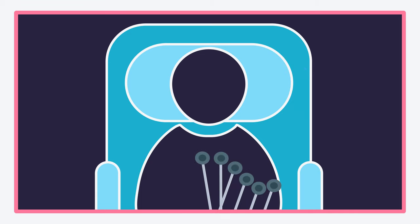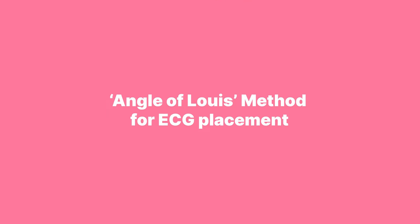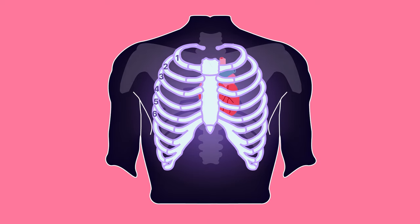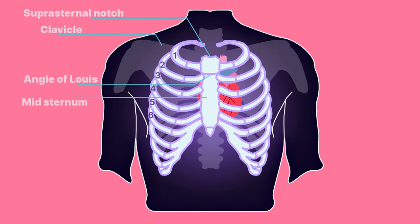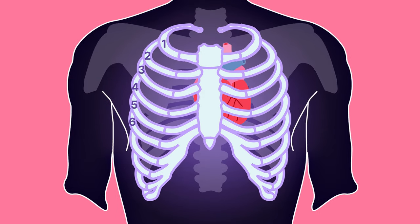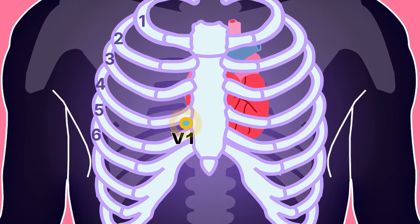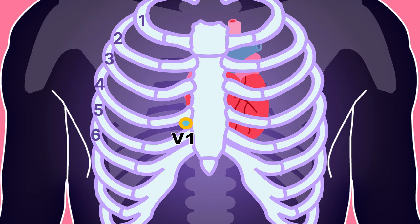Placement of electrodes requires correct anatomical identification. Using the Angle of Louis method: locate the sternal notch, then the Angle of Louis at the second rib, and feel down the sternal border until the fourth intercostal space is found. V1 is placed to the right of the sternal border and V2 is placed to the left of the sternal border.